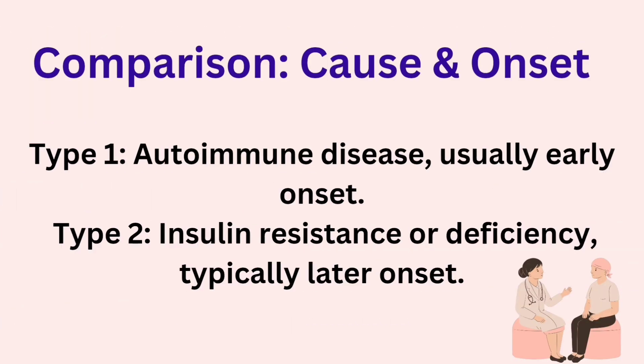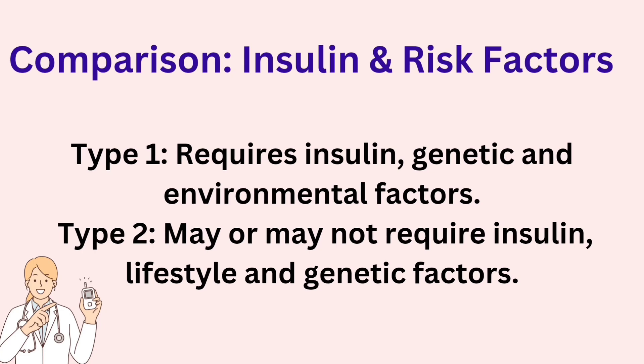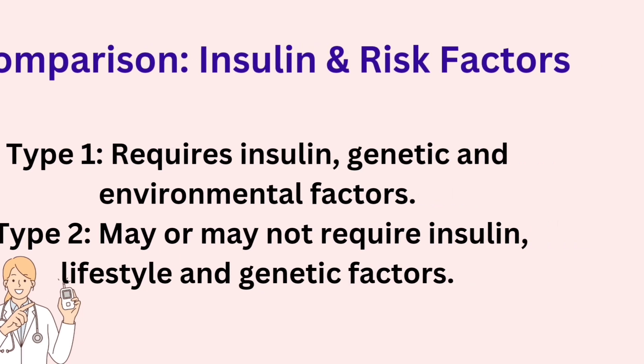Comparison by cause, onset, insulin, and risk factors: Type 1 diabetes is an autoimmune disease with usually early onset, requires insulin, and is associated with genetic and environmental factors. Type 2 involves insulin resistance or deficiency, typically has later onset, may or may not require insulin, and is associated with lifestyle and genetic factors.